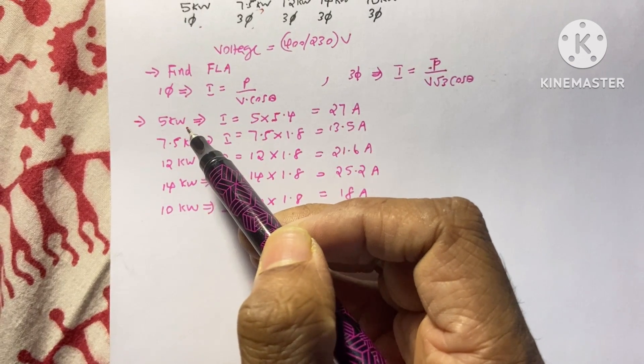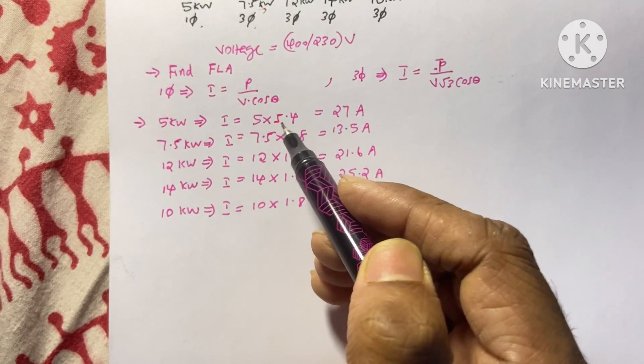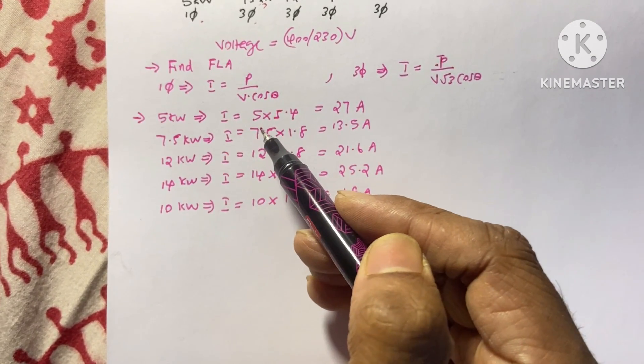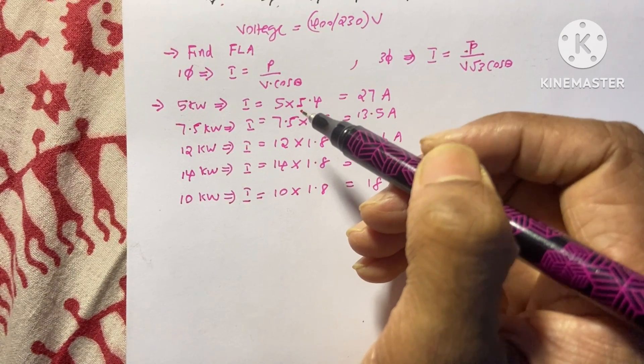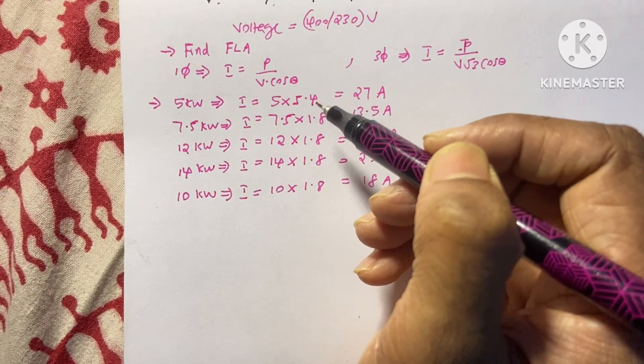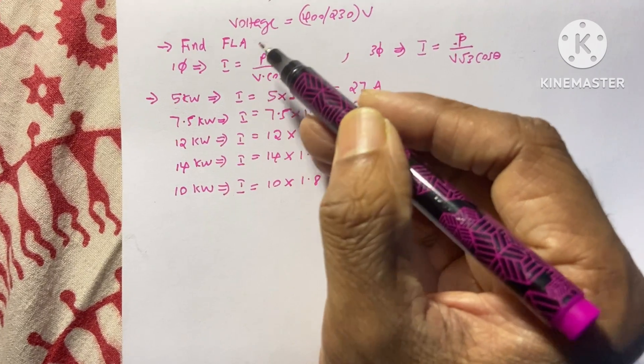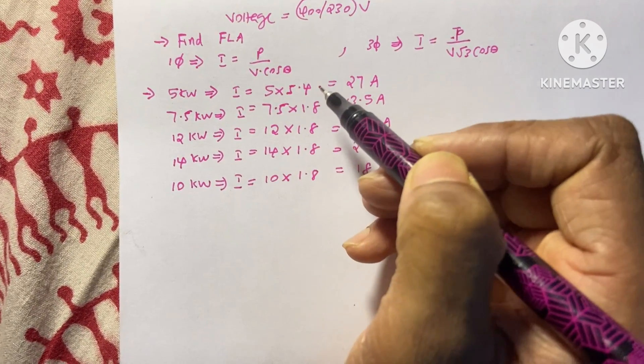So for the first motor, 5 kilowatt motor is single phase motor. So the current is 5 into 5.4. I use here a trick to find the full load ampere easily. You can find the full load ampere either by using this equation directly by putting all the values in this equation or you can use this simple trick.